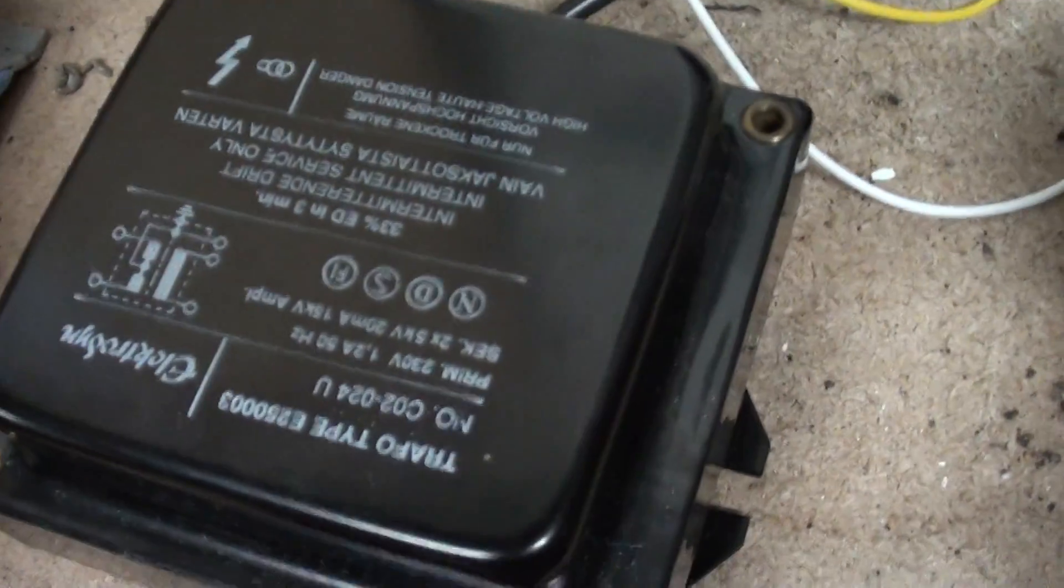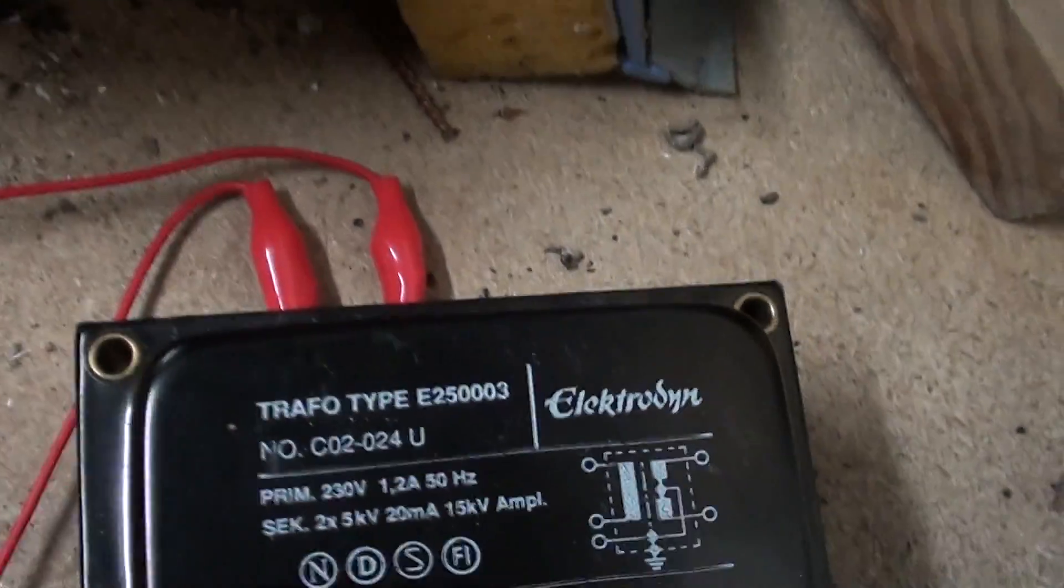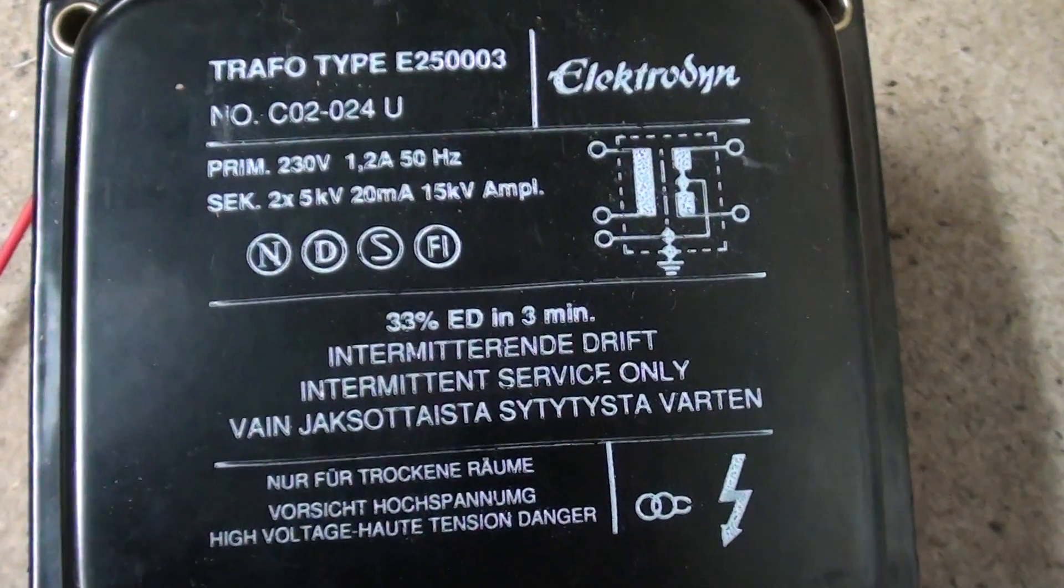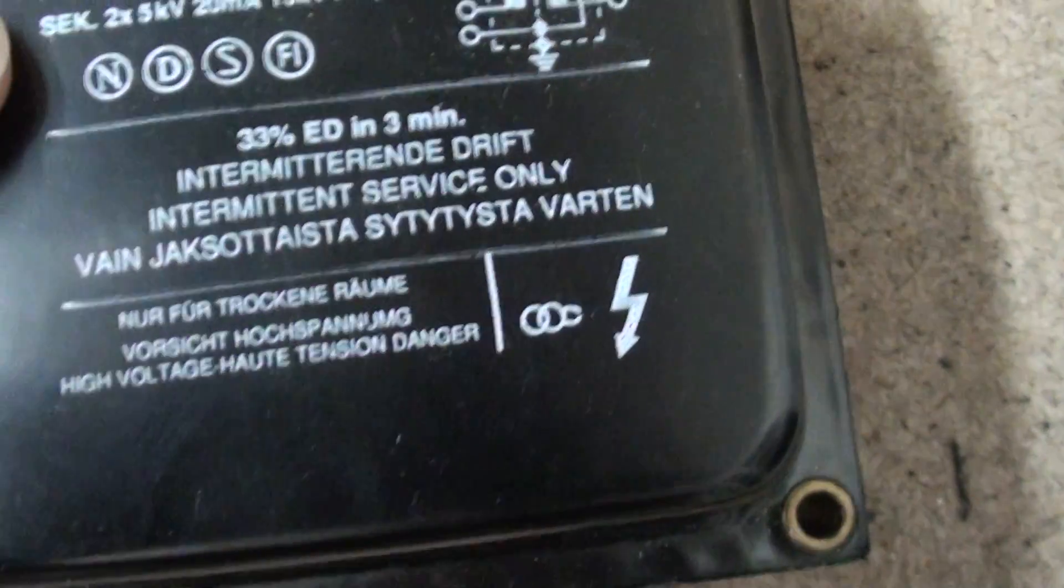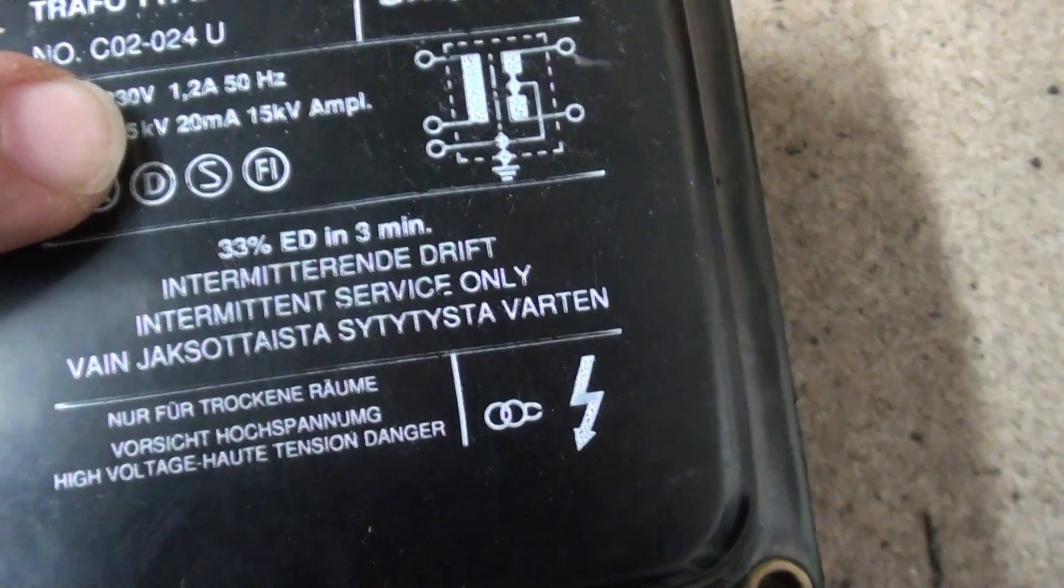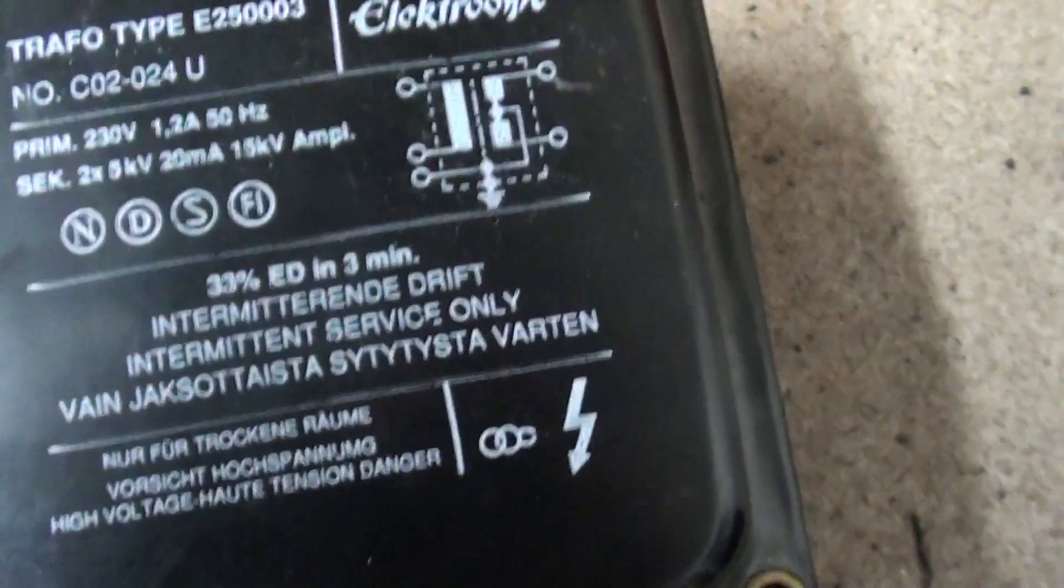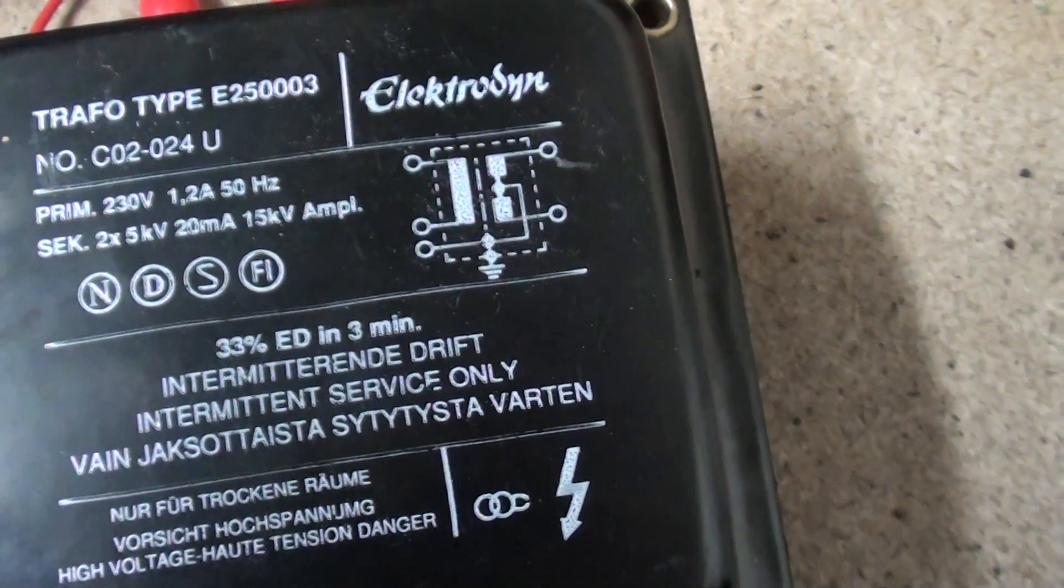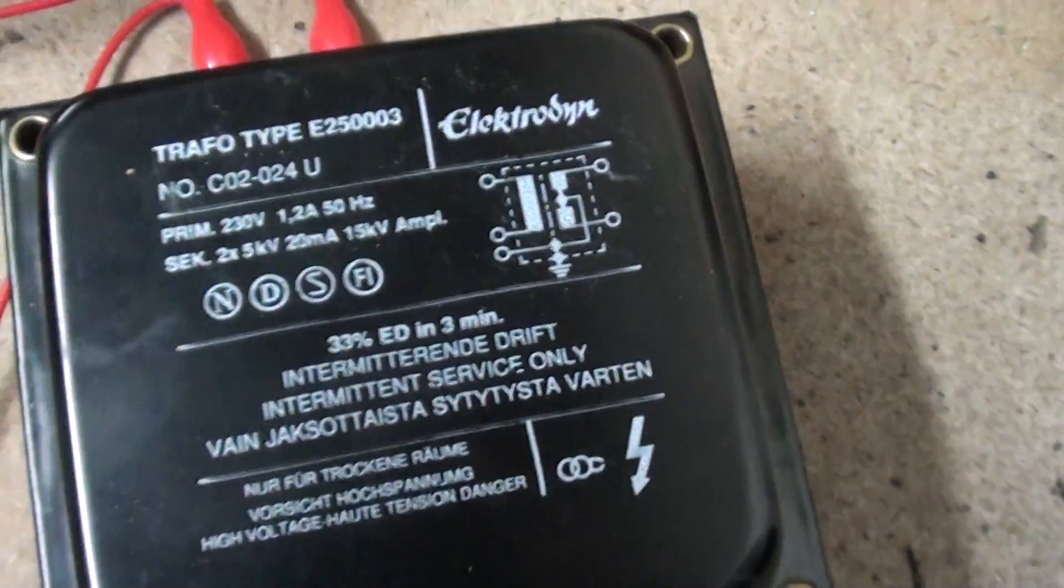So this is the other amplifier transformer, I apologise. So I'll just show you all the details of that. Interesting here, I don't really know what this means. Secondary, two times five kilovolts, but an amplitude of 15 kilovolts. I don't know too much about transformers at all, so I don't really know how that's possible, because for me two times five is ten, but hey, there we go.